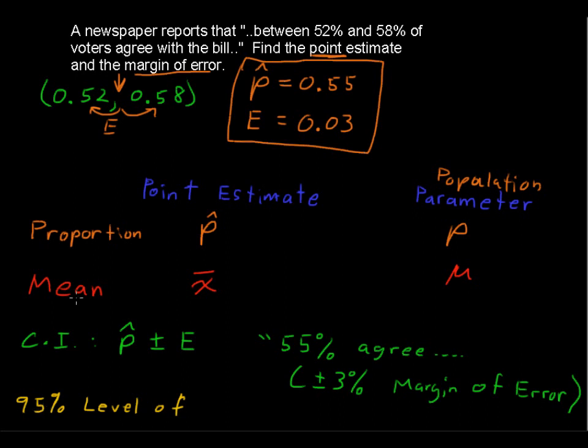You're going to use a percent also when you're doing a confidence interval about a mean. But this 95% level of confidence brings into play, how sure are you that your confidence interval contains the true parameter?